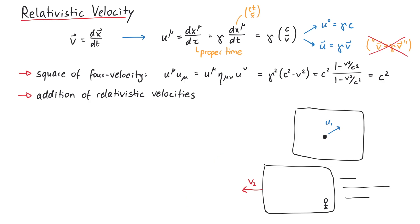We can now get the resulting velocity u3 as the Lorentz transformation of u1. The corresponding boost velocity is minus v2. This minus sign is important, since our new reference frame moves to the left compared to the original one.